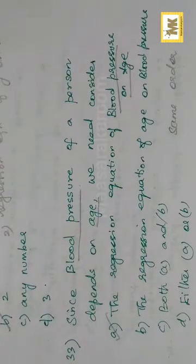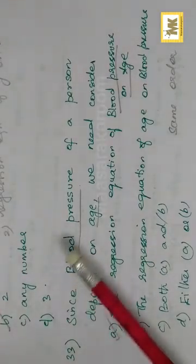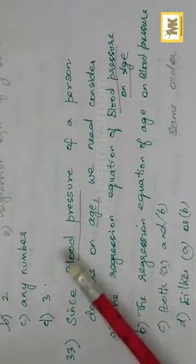Since blood pressure of a person depends on age, we need to consider the regression equation of blood pressure on age — in the same order, dependent on independent. So it is regression equation of blood pressure on age.